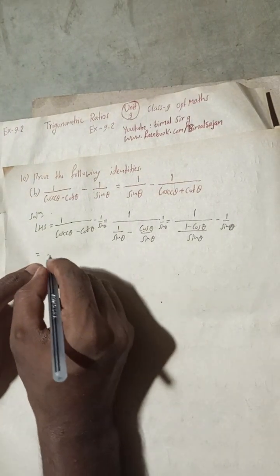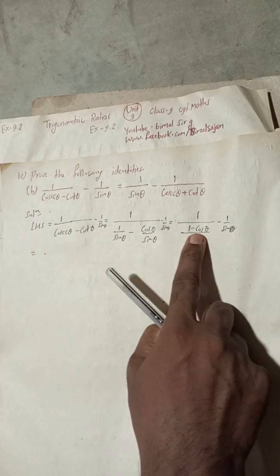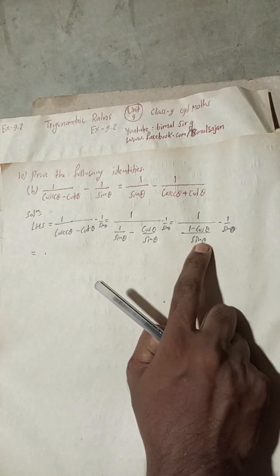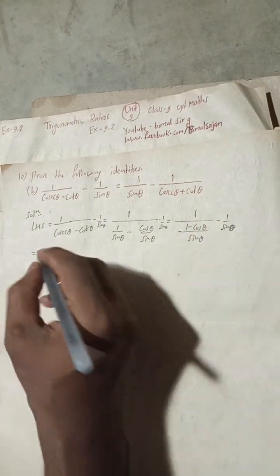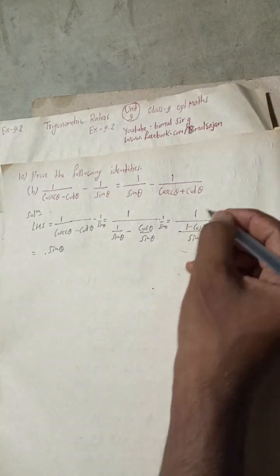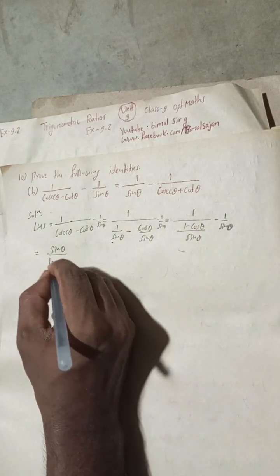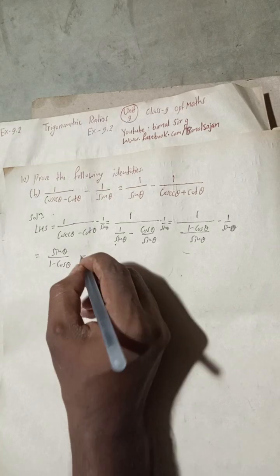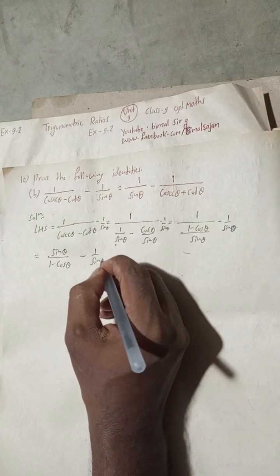Now we take sine theta as the common factor. The sine theta in the denominator can be taken out, so after simplification we get the expression as sine theta over sine theta minus cosine theta, minus one by cosine theta, minus one by sine theta.